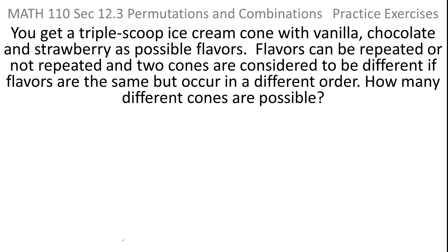This problem says you get a triple scoop ice cream cone with flavors vanilla, chocolate, and strawberry as possibilities. The flavors can be repeated or not, so you can duplicate a flavor or have all different flavors. Two cones are said to be different if the flavors are the same but they're on the cone in different orders. So putting strawberry at the top versus putting strawberry at the bottom of the scoop is a different cone. Given all that, how many different cones could you possibly come up with?